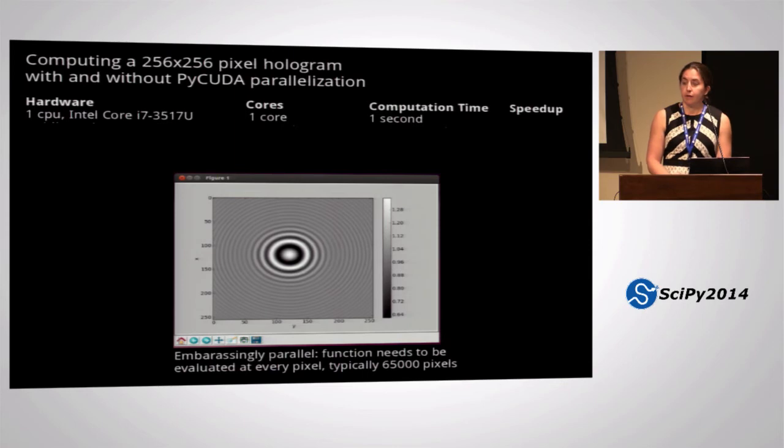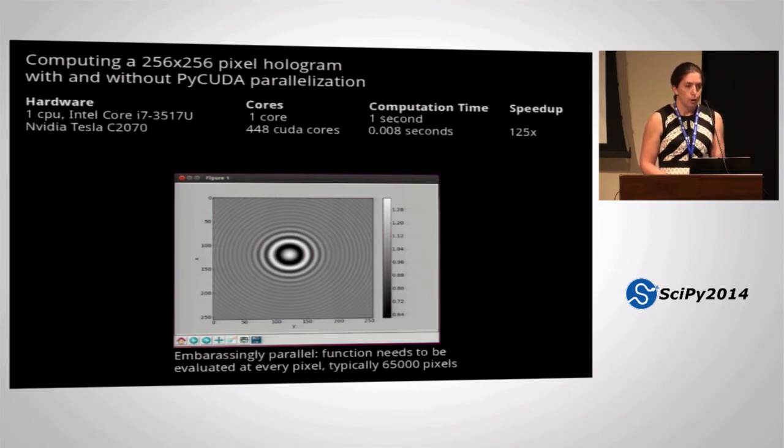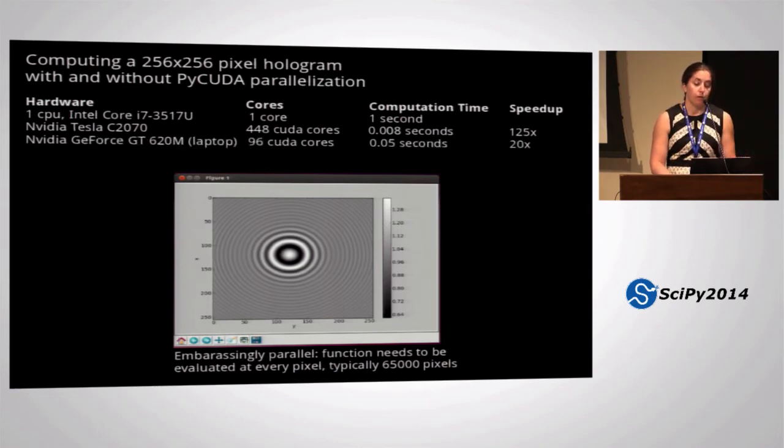An impediment to this was that it takes one second to calculate an image, even just 256 by 256 pixels. And so I decided to parallelize this. I used PyCUDA, and on a research-grade GPU, you can speed it up 125 times. This is because the slowest part is evaluating these functions at every single pixel, and it's completely pixel-wise parallelizable. But I wanted to be able to interact with this on my own computer, wherever I might go. And on the GPU on this laptop, it takes 50 milliseconds, and that's still fast enough to be able to have some kind of interactivity.